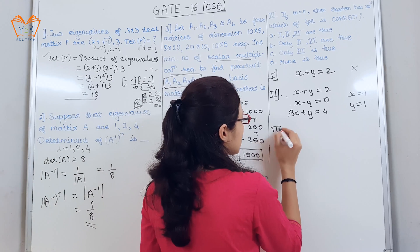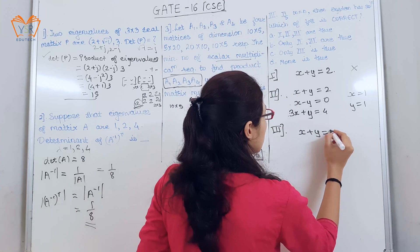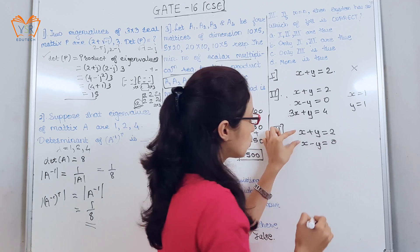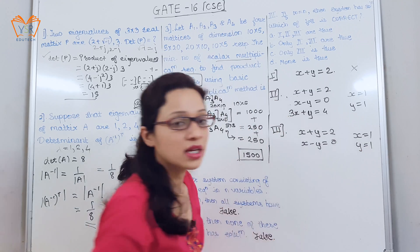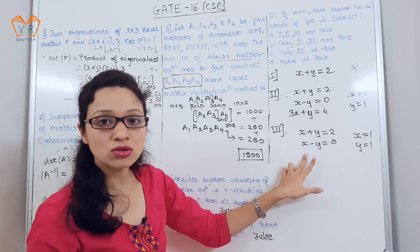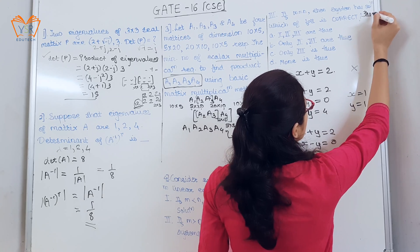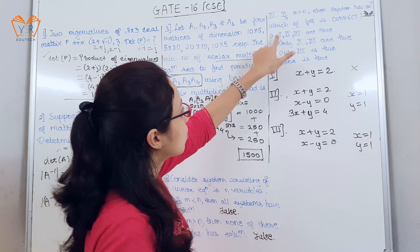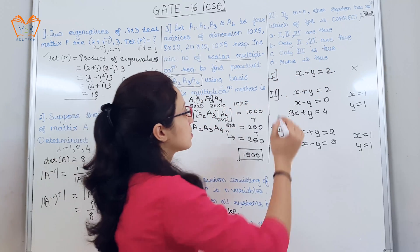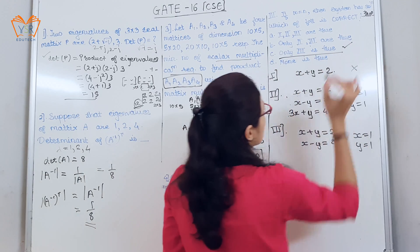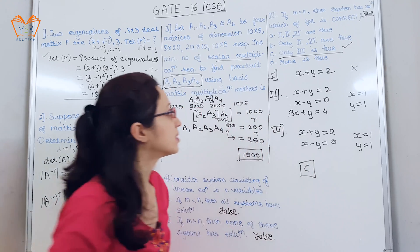For statement 3, where M equals N, consider two equations with two unknowns. Solving gives X=1, Y=1, so a unique solution exists. The statement says the system has a solution, which is true. Checking the options: A is wrong (not all true), B is wrong (statement 2 is false), so the answer is C — only statement 3 is true.